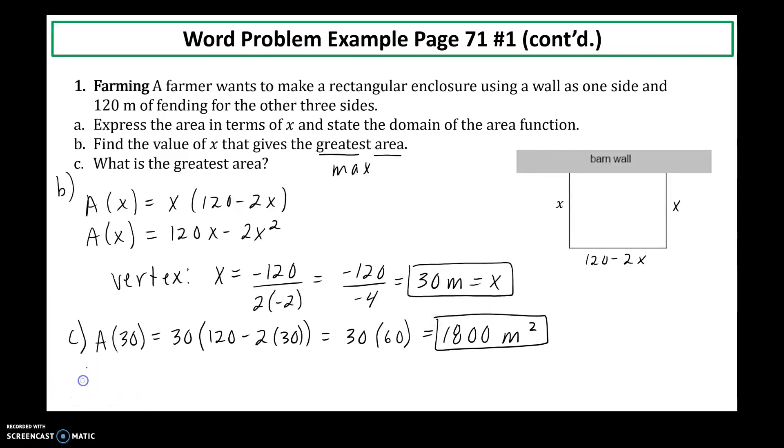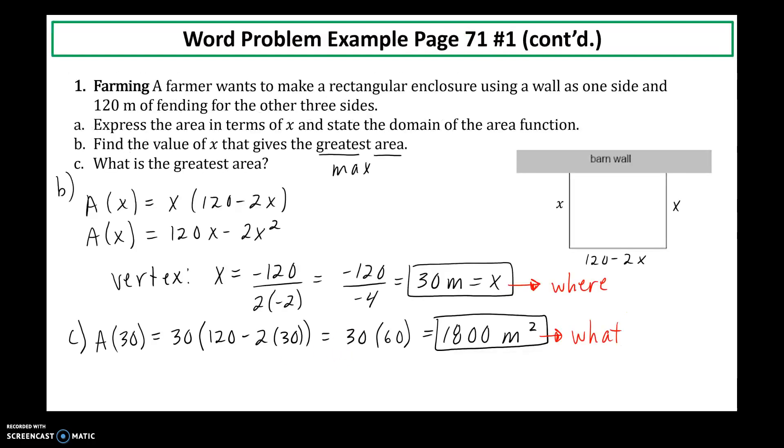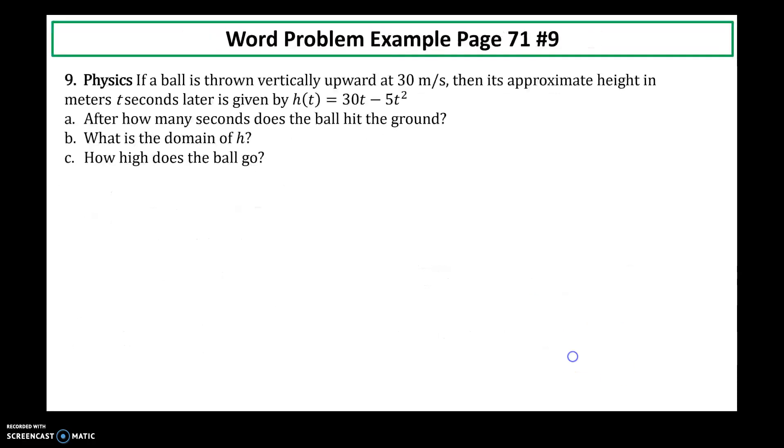So we've talked about this with graphs. But remember, the x value is where the vertex occurs. The y coordinate is what the actual value of the max or min is. So where will the max occur? When x is equal to 30 meters. What is the actual maximum? That's when we have to plug it back into whatever function we're attempting to maximize or minimize.